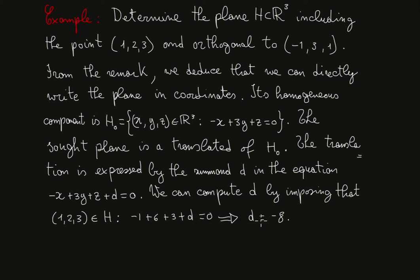And this condition plugged in gives -1 + 6 + 3 + d equals zero, which implies d equals -8. Therefore, the plane H in coordinates is expressed as x, y, z in R³ such that -x + 3y + z - 8 equals zero.